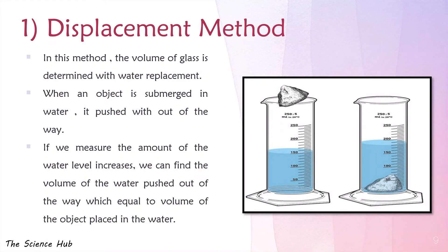In the displacement method, the volume of glass is determined by water replacement. When an object is submerged in water, the water is pushed out. If we measure the increase in water level, we can find the volume of water displaced, which equals the volume of the object placed in the water.